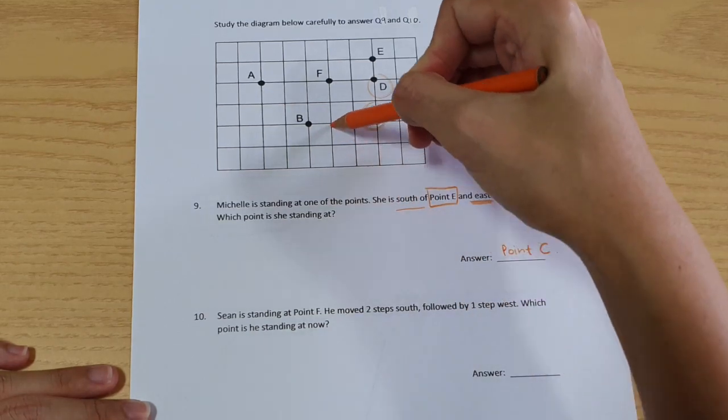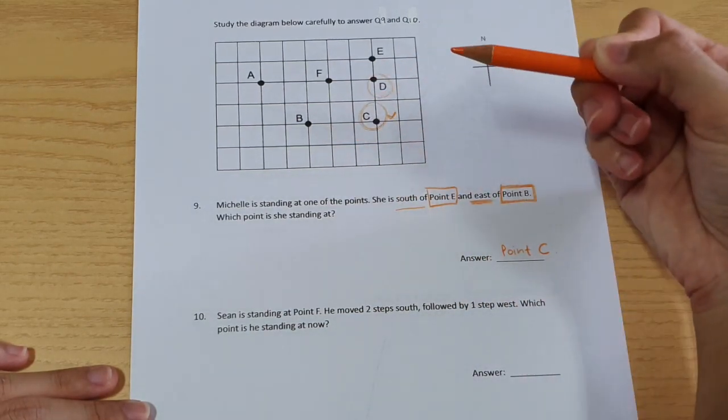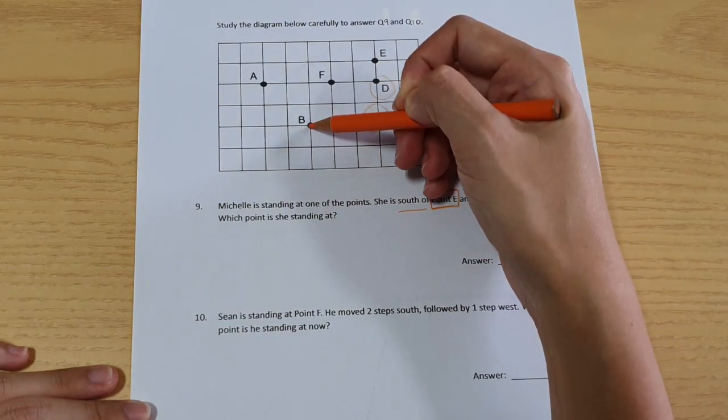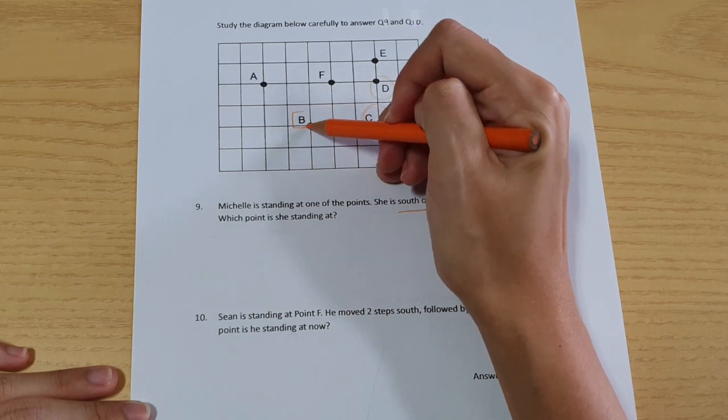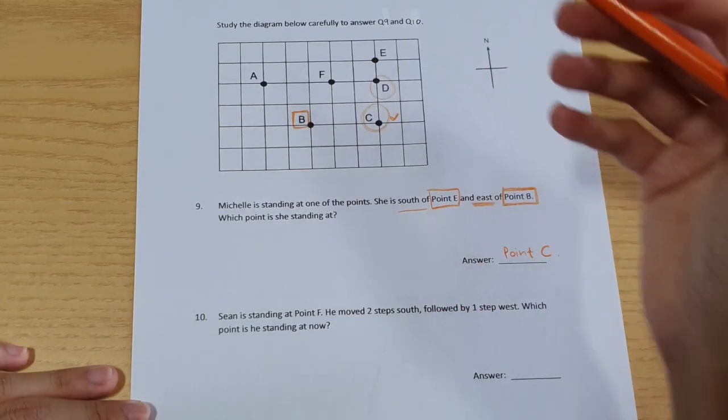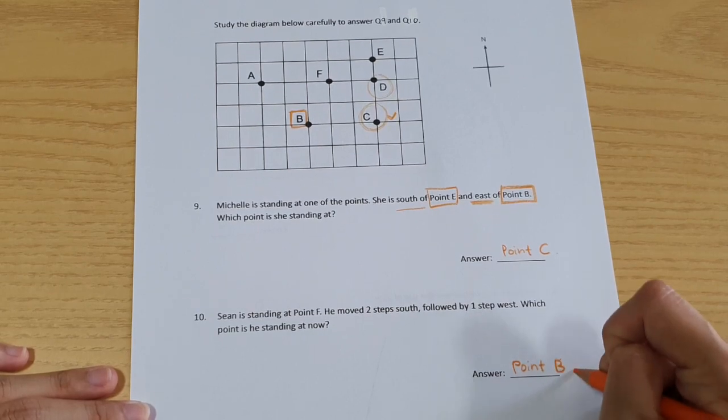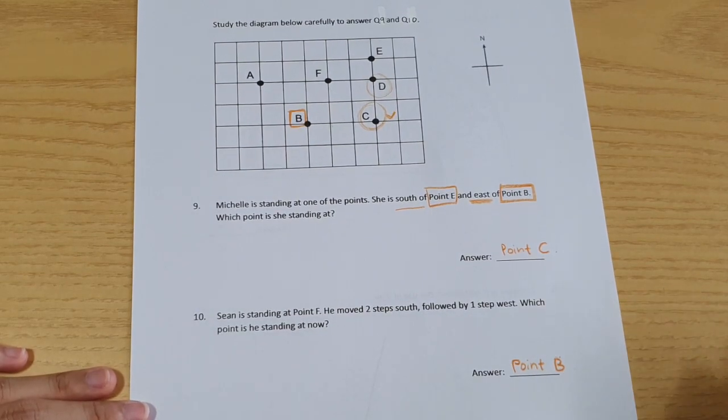And then one step west. West is this direction. One step west. And he is now standing at point B. Point B. Did you also get this question correct?